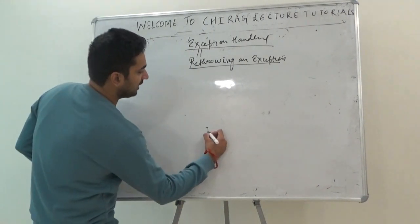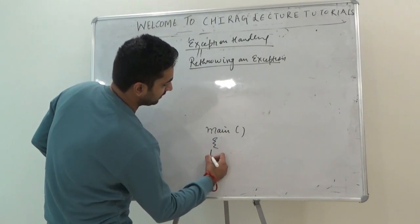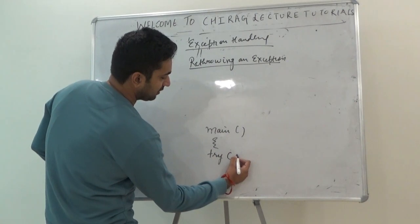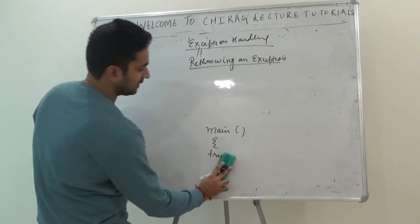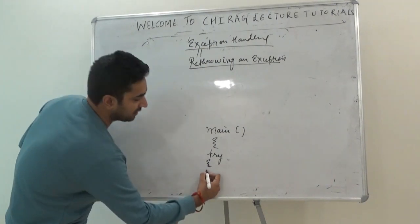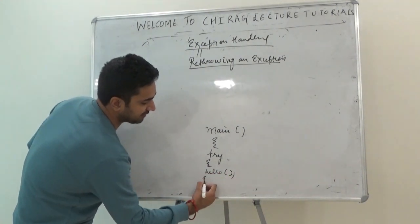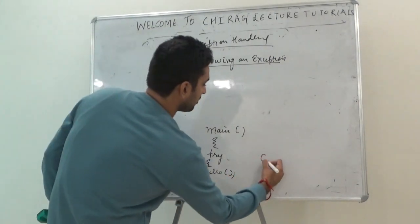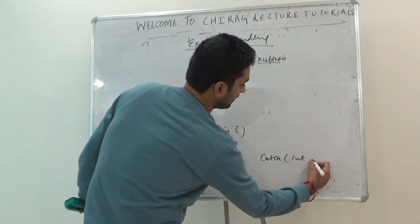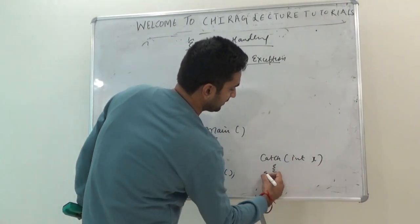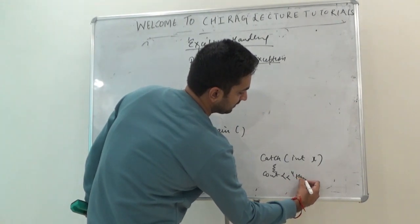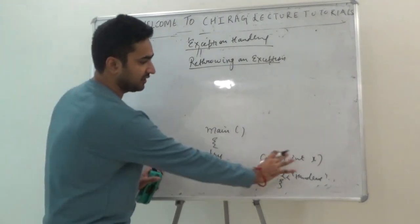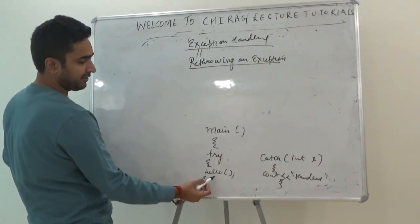We'll take a particular example. In main, I'm writing a try block, and inside try I'm calling a function called hello. There is also a catch block written as catch(int x) with cout printing 'handled'. I'll explain the significance of this catch block shortly.